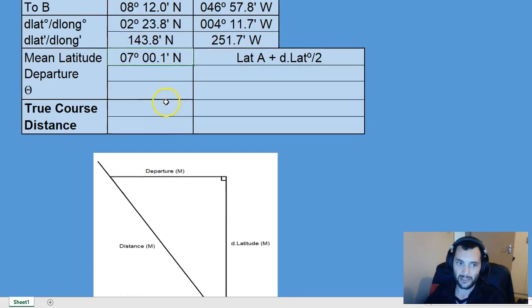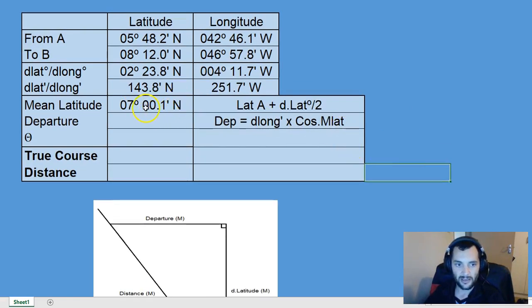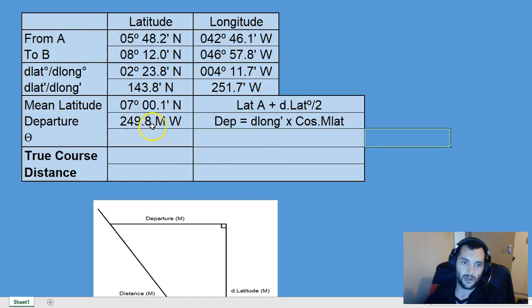That mean latitude we will now use to calculate departure. The formula we'll use is: departure equals d longitude in minutes multiplied by the cosine of mean latitude. We get the cosine of 7 degrees 0.1, approximately 0.99, multiply that by the d longitude, 251.7 west. That gives us a value of 249.8.